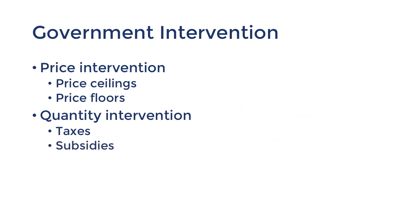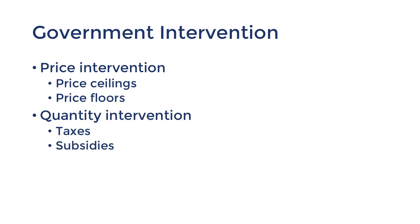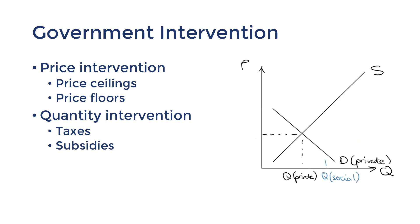Next is subsidies for merit goods. Merit goods are undervalued because their social benefits are not taken into account. So in order to increase the quantity, subsidies are used. Subsidies cause the cost of production to fall, therefore shifting the supply curve to the right. This causes prices to fall and demand to expand. Education is a merit good — this is why the government subsidises private schools on top of providing public schools.